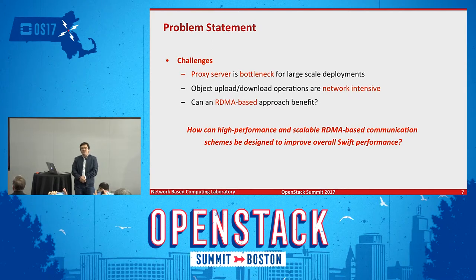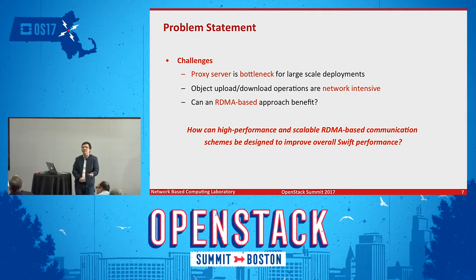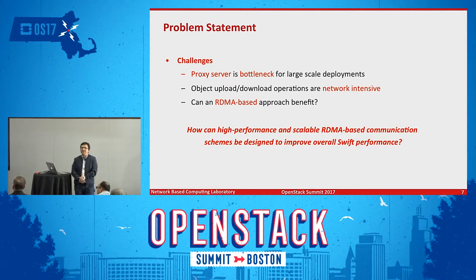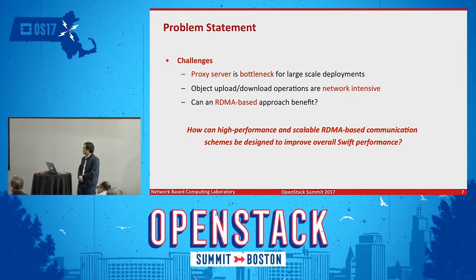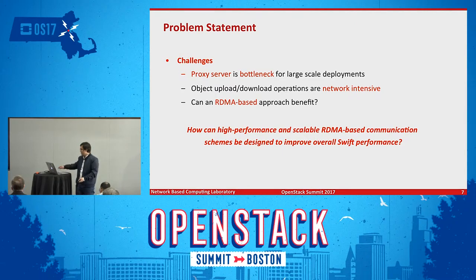We are trying to address some key challenges. We see two problems in the Swift architecture. The first is that the proxy server may be a bottleneck because a lot of requests must come through it first. The second is that all object upload and download operations are based on TCP/IP socket communication, which is network-intensive. The question is: can an RDMA-based approach benefit this design, and how can high-performance scalable RDMA-based communication be designed to improve overall Swift performance — all without changing the Swift API.